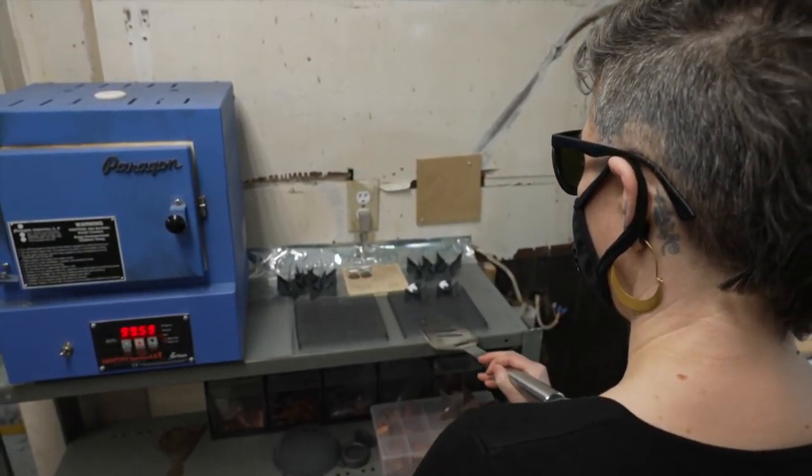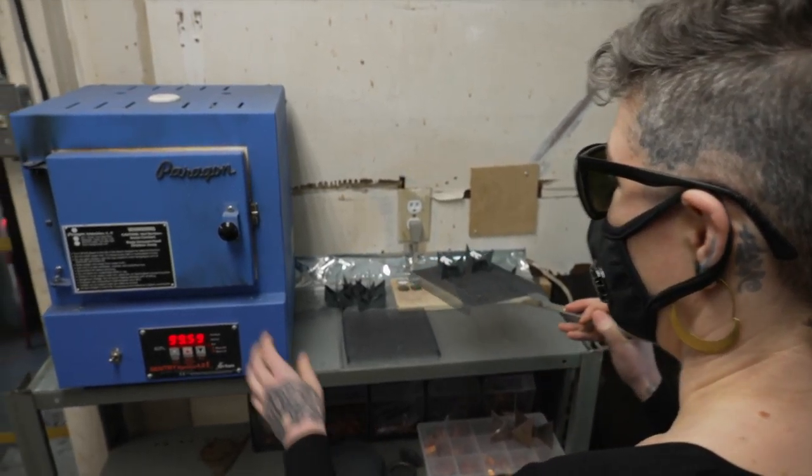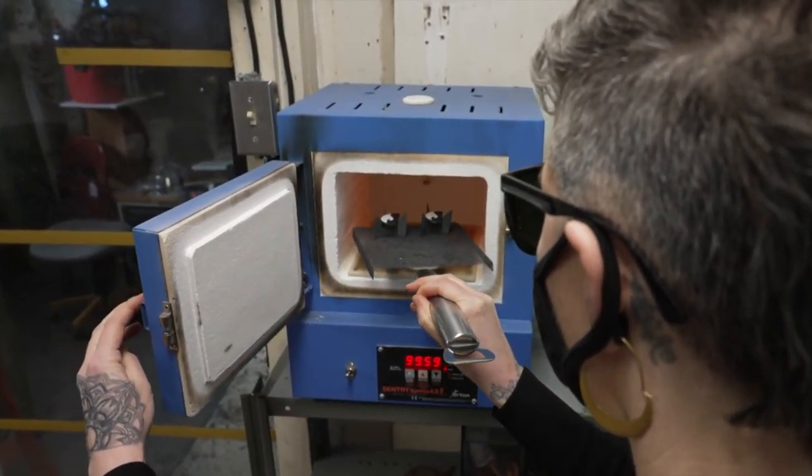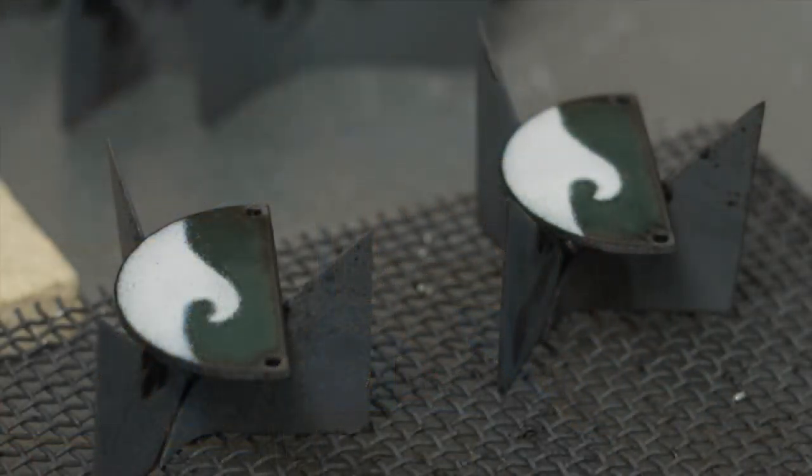The pieces are placed back on trivets and into the kiln for another firing. The timing for this firing is precise. Too long and the white enamel would melt too much and run. When finished, they cool.